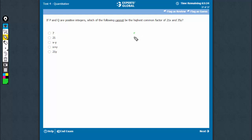21x and 35y have a 7 in common. A 7 is definitely there. Let's find more.